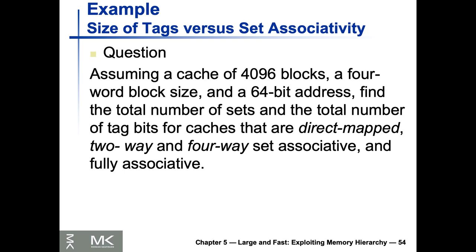Question: assume a cache of 4096 blocks with a four-word block size and a 64-bit address. Find the total number of sets and total number of tag bits for caches in different categories: direct map, two-way, and four-way.